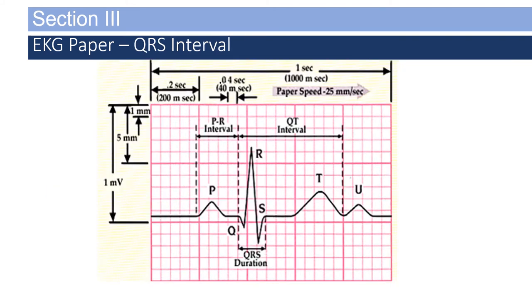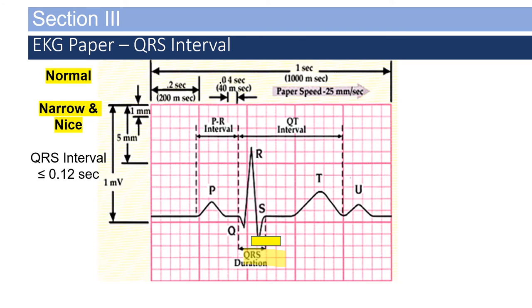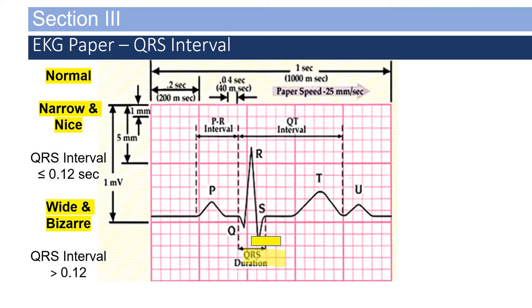The next segment is the QRS. Some QRS segments don't have a Q-wave and only have an RS wave, but cumulatively it is called the QRS complex. It is representative of ventricular depolarization. A normal QRS — narrow and nice — is less than or equal to 0.12 seconds. One that is wide and bizarre is greater than 0.12 seconds, indicating it originated in the ventricular region rather than taking a pathway from the SA node down. An example would be a premature ventricular contraction or ventricular tachycardia.